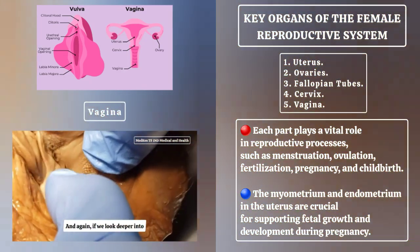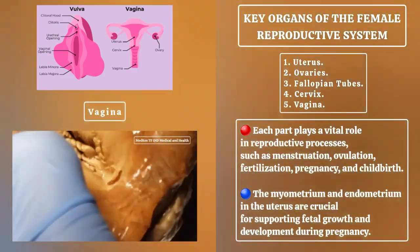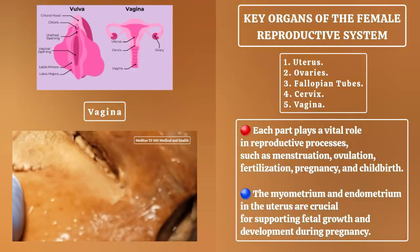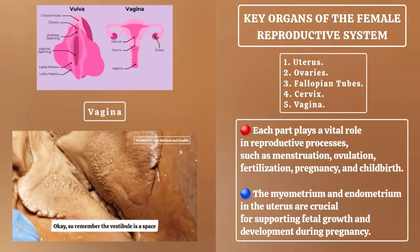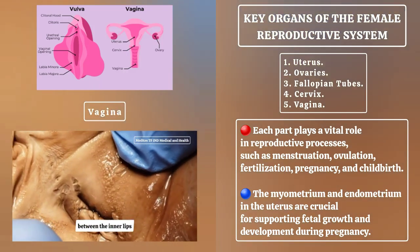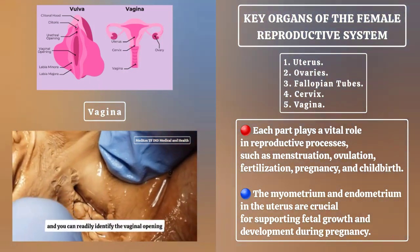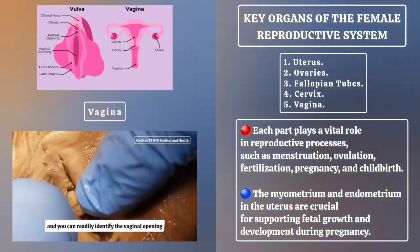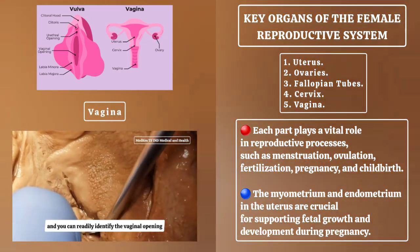If we look deeper into the vestibule — the vestibule is a space between the inner lips — you can readily identify the vaginal opening, or the orifice.